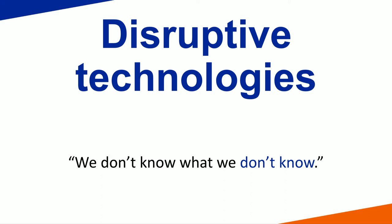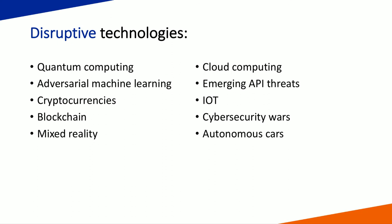Disruptive technologies — not many people like change, and we don't know what we don't know. These are things that will affect us whether we like it or not. Quantum computing: what does that mean for security? Imagine being able to brute force the most incredible encryption algorithms in minutes or days. Adversarial machine learning: machine learning that learns machine learning — a pattern that goes against your anomaly detection models, learning the anti-patterns and how to sneak through your security. Emerging API threats: an API is a window into an application — if somebody hijacks that, they could change everything.